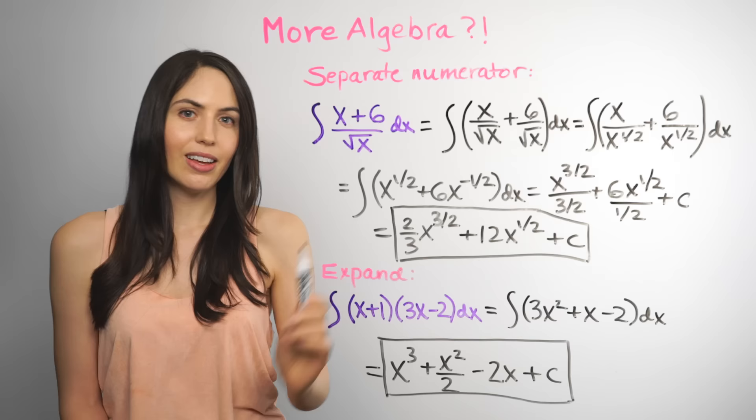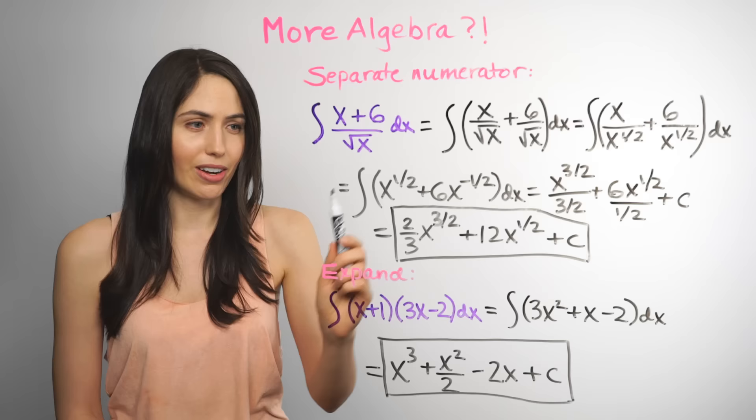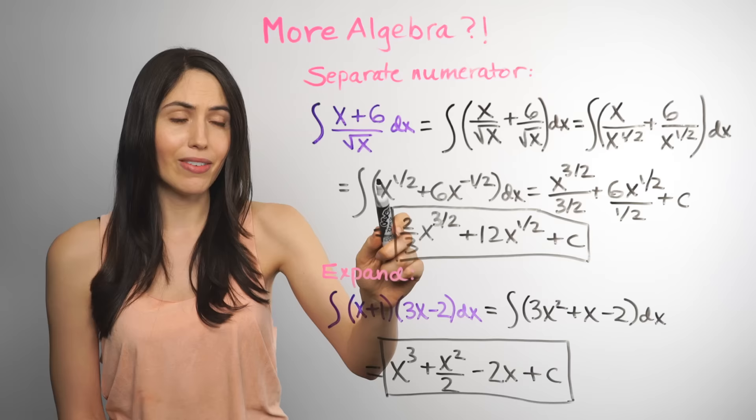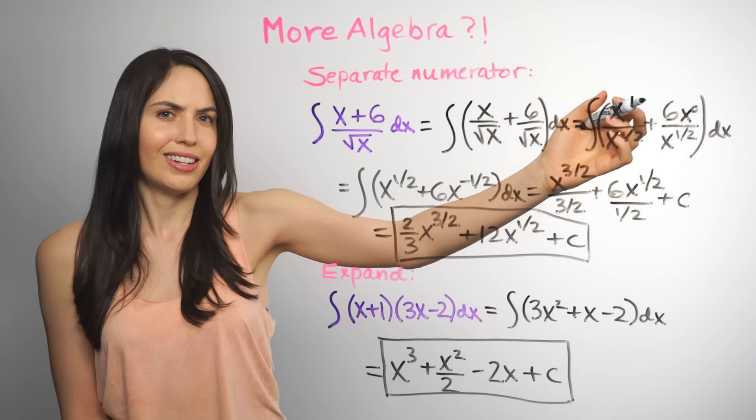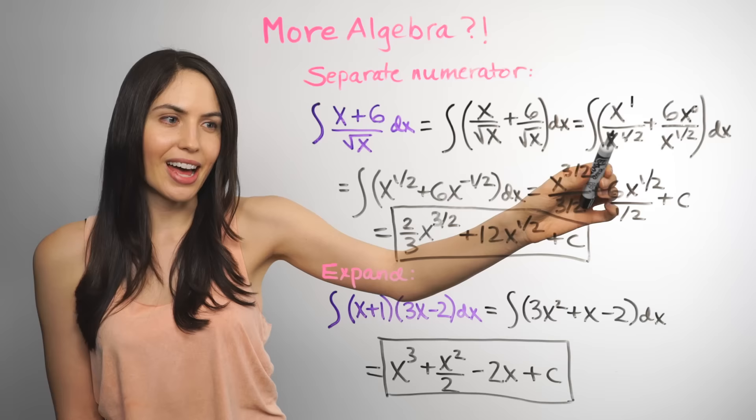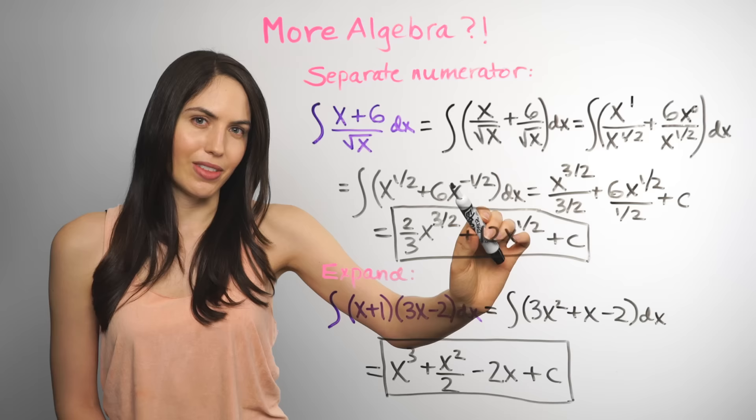Well, if you think of it as x to the first and an invisible x to the zero, subtracting powers would give you one minus a half, positive one-half here, but zero minus a half, negative one-half there. So that's why.